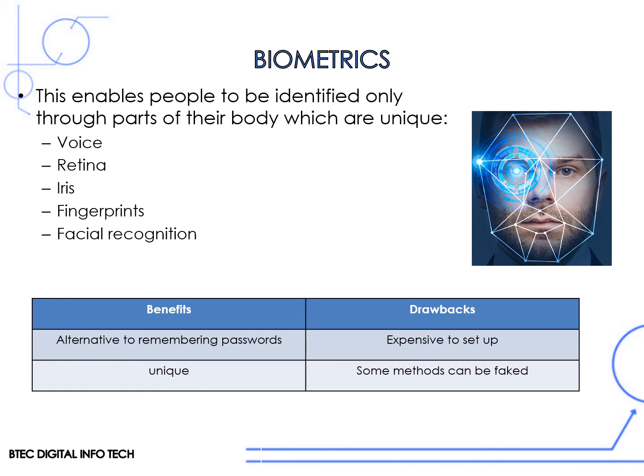Biometrics is a very useful way of preventing unauthorized user access. These usually need to be applied to some sort of doorway or to enter a computer system. Biometrics covers any method where access is granted based on parts of the body which are unique. Examples of this are voice, retina, iris, fingerprints and facial recognition — these are supposedly completely unique to every human. The most common ones used are fingerprints and facial recognition because they are much cheaper to set up than the others.